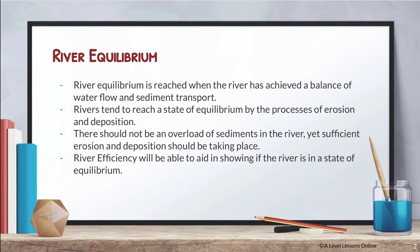River equilibrium is reached when the river has achieved a balance of water flow and sediment transport. The river reaches this stage through the processes of erosion and deposition. Essentially, equilibrium means the whole river is at a kind of standstill — everything is equally balanced. There is enough erosion and enough deposition at the same time to ensure the river runs smoothly, with no overload of sediments.